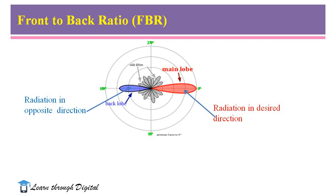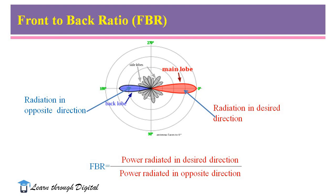Therefore, this front to back ratio is calculated with the help of this expression. Front to back ratio is equal to power radiated in the desired direction to the power radiated in opposite direction. Otherwise, FBR is power radiated in forward direction to the power radiated in backward direction.